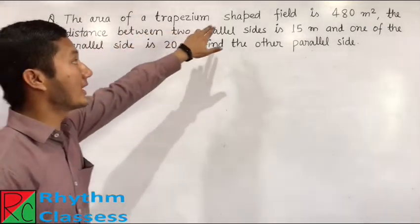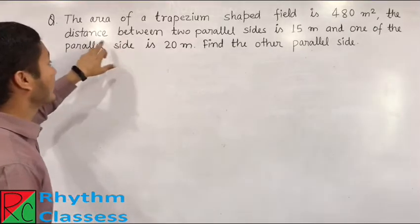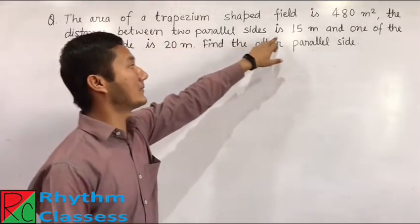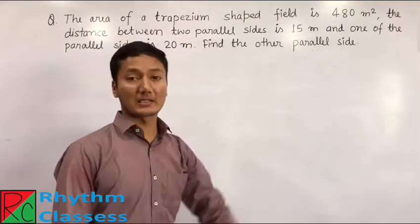The area of a trapezium shaped field is 480 meter square. The distance between two parallel sides is 15 meter and one of the parallel sides is 20 meter. Find the other parallel side.